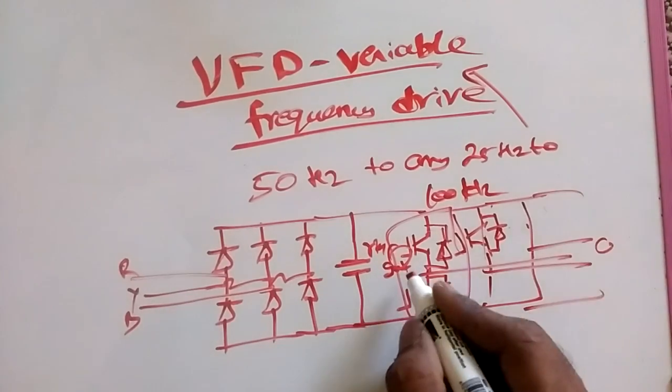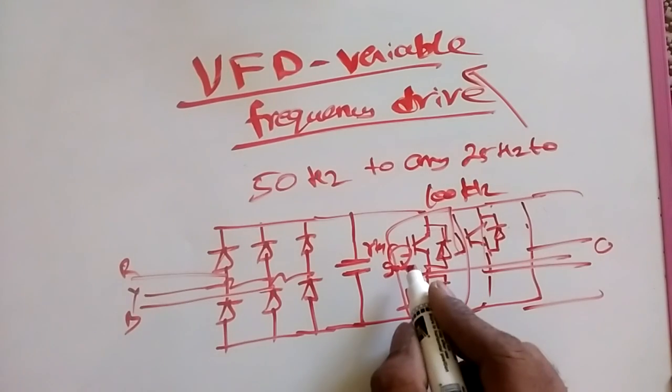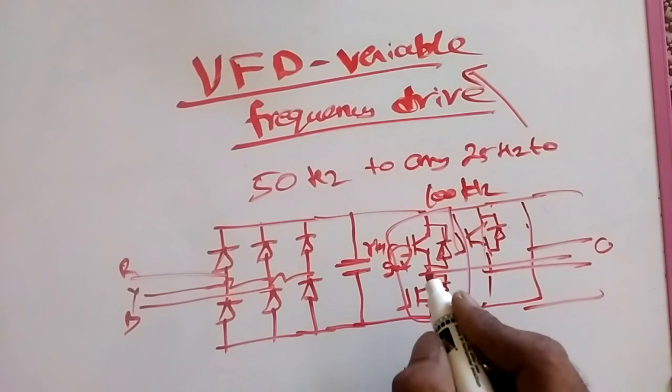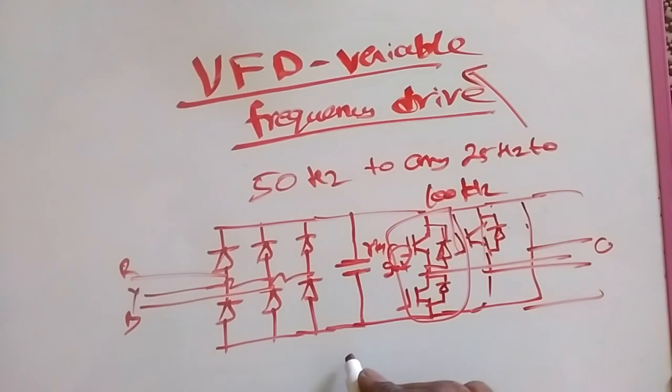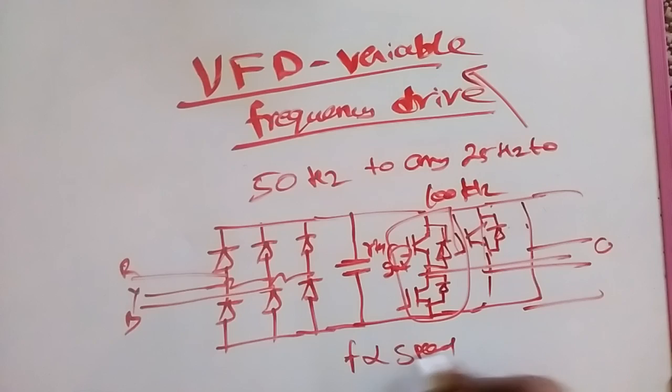In this timing signal, we change the frequency. If we have a high frequency, motor runs slow. If we have a low frequency, motor runs fast. How does this happen? Frequency is inversely proportional to speed. That's why we are getting this result.